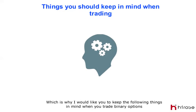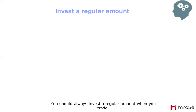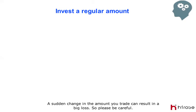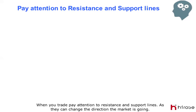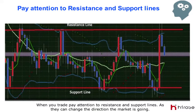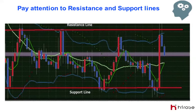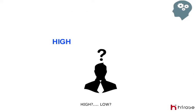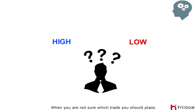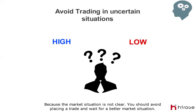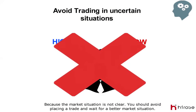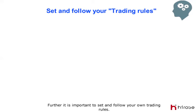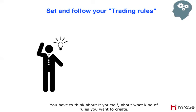This is why I would like you to keep the following things in mind when trading binary options. You should always invest a regular amount when you trade - sudden changes in the amount you trade can result in a big loss, so please be careful. When you trade, pay attention to resistance and support lines, as they can change the direction the market is going. When you are not sure which trade you should place because the market situation is not clear, you should avoid placing a trade and wait for a better market situation. It is important to set and follow your own trading rules - think about what kind of rules you want to create.